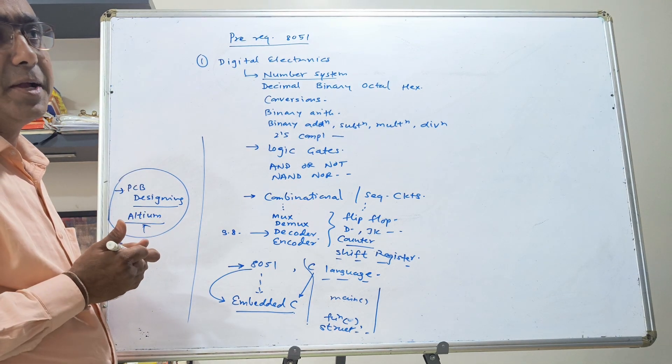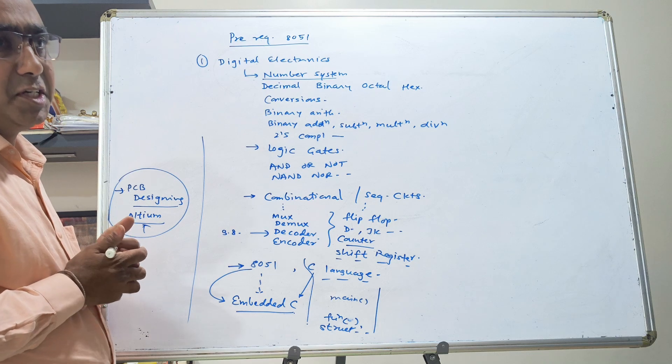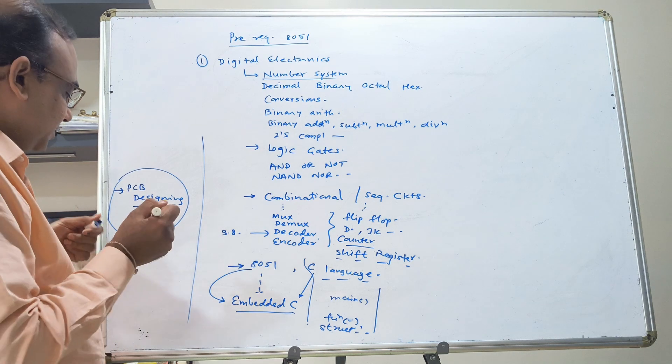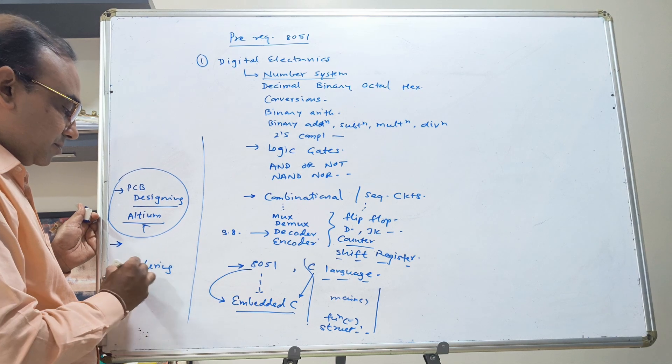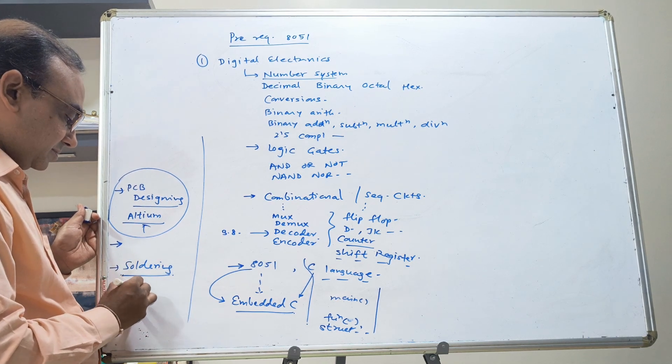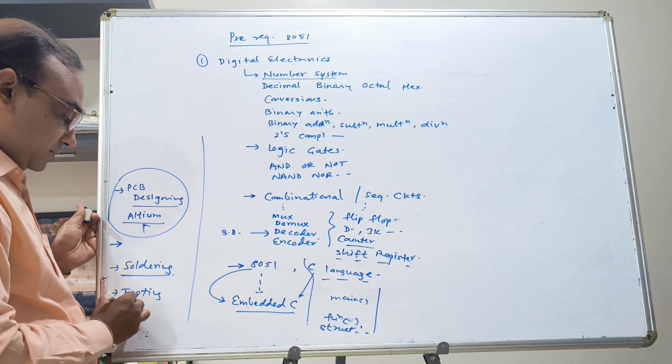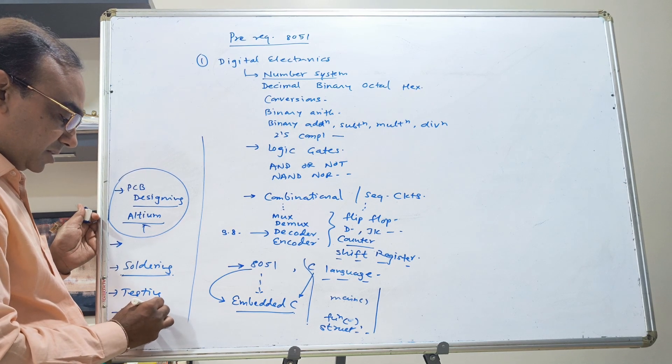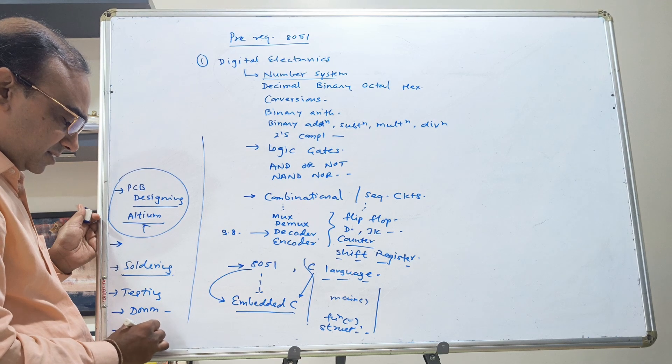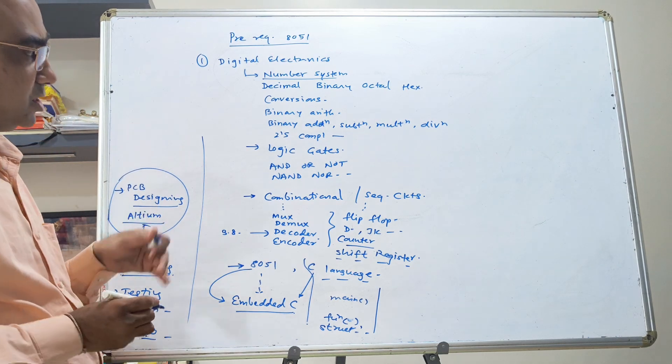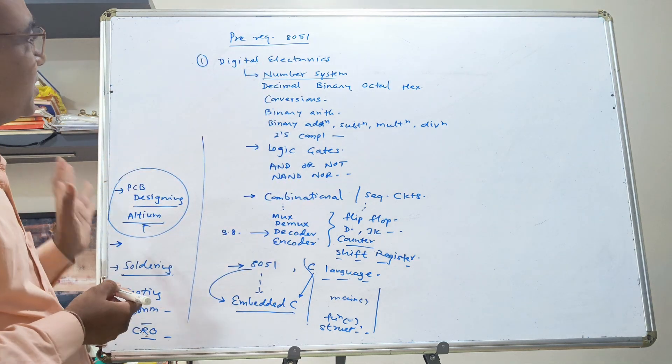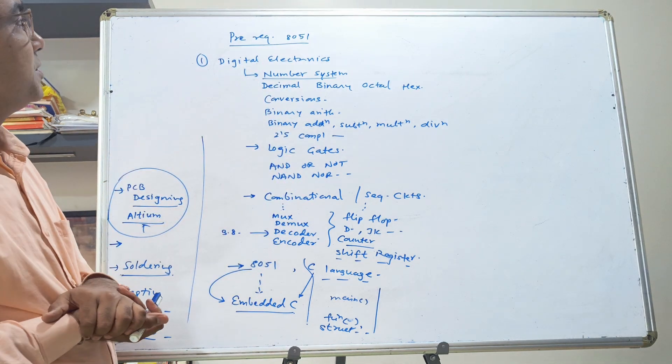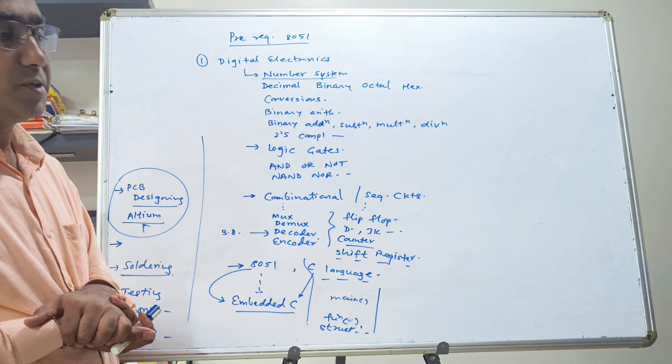We can have screen printing. Then we can have etching and drilling and all those things. You should know basic soldering, testing. You should be able to use DMM, digital multimeter and all that. In some cases, you may need cathode ray oscilloscope to see the waveforms. So all these things are needed if you want to make a project in 8051.